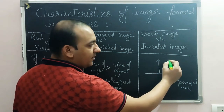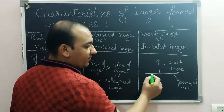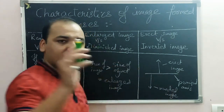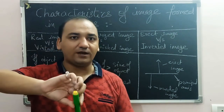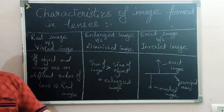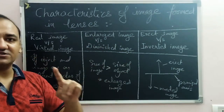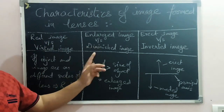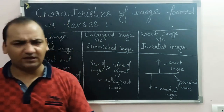If the image is upright relative to the object, it is an erect image. If the image is flipped upside down, it is an inverted image. Note that contradictory pairs cannot coexist — an image cannot be both real and virtual, both enlarged and diminished, or both erect and inverted at the same time. At any given time, one characteristic from each pair applies, giving three characteristics per image.